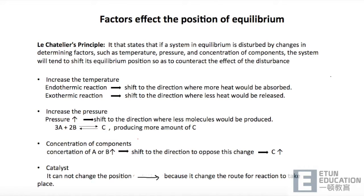It states that if a system in equilibrium is disturbed by any changes in determining factors such as temperature, pressure and concentration of components, the system would tend to shift its equilibrium position so as to counteract the effect of the disturbance.